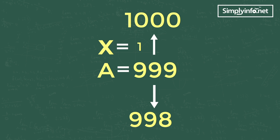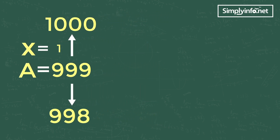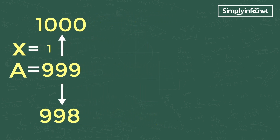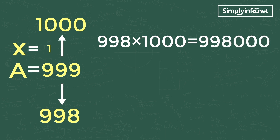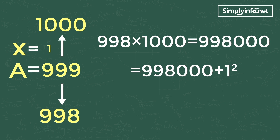Don't worry about the plus or minus signs while doing the difference — we are performing the square operation, so we will get positive values after squaring any number. Now by multiplying 998 with the easy fancy number 1000 we get 998000. By adding 1 square to 998000 gives you the answer: 998001.